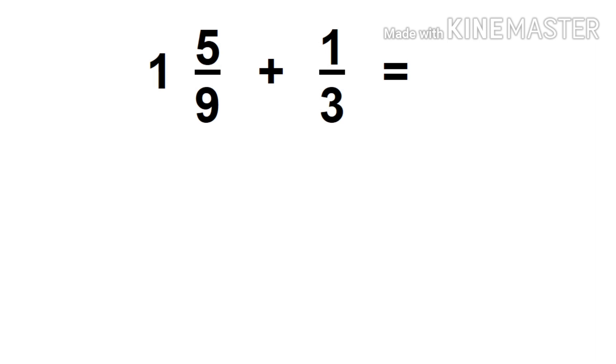In prime factorization, we're going to write our denominators, 9 and 3. After writing our denominators, we're going to write all the factors that when we multiply, the answer is our denominator.